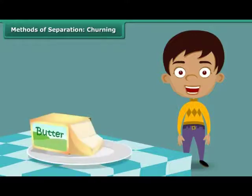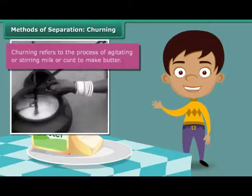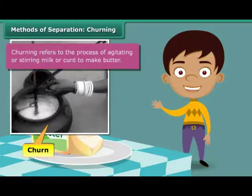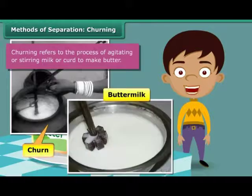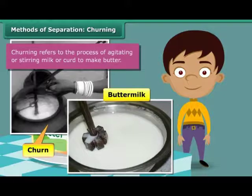This is butter. Do you know how butter is made? When milk is stirred vigorously in a churn, butter is obtained. The liquid left behind is the tasty, nutritive buttermilk that is relished by many as a refreshing summer drink. Do you see that two useful components emerge from a mixture when this method of separation is employed?